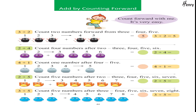Add by counting forward. Count forward with me — it's very easy. 3 plus 2: count two numbers forward from 3 — 4, 5. 2 plus 4: count four numbers after 2 — 3, 4, 5, 6. 4 plus 1: count one number after 4 — 5.